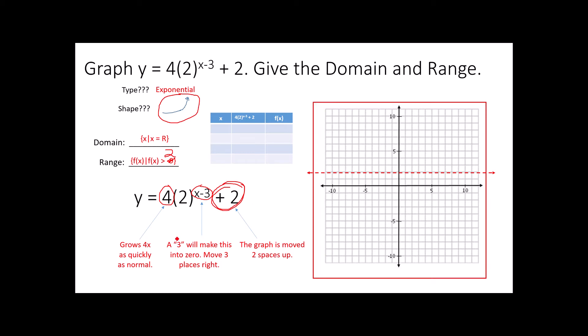In the last problem, my range was all values greater than negative 9. This time I'm going to have values that are greater than 2, so that's where my asymptote is going to be. The graph is going to be higher than normal, shifted 3 spaces to the right, and steeper than I would normally expect. Because 3 is what makes this a 0, I'm going to start my table with a 3: 4 times 2 to the (3 minus 3) plus 2. Order of operations: 3 minus 3 is 0, 2 to the 0 is 1, 4 times 1 is 4, add the 2, I get 6. So 3, 6 is a dot on my graph.